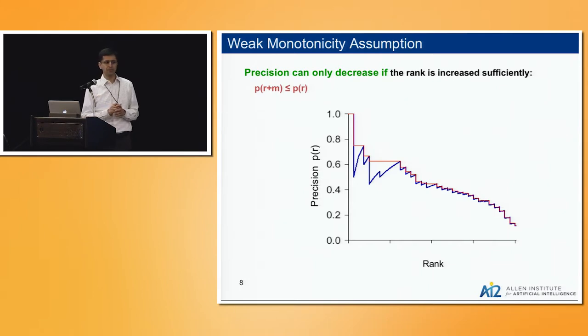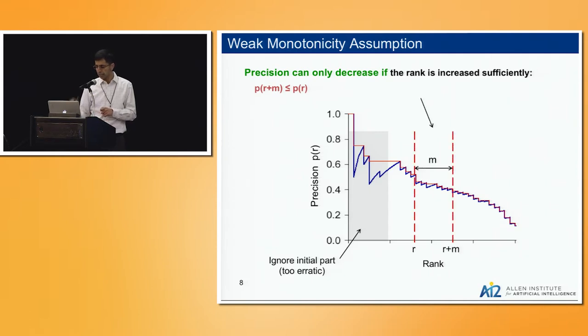Let's get to that assumption I mentioned earlier, weak monotonicity. What this says is that if you plot this precision function, precision as a function of rank R, in the beginning we can't do much. These functions tend to be very erratic just because they are averages of a few numbers of zeros and ones. But once you get far enough, these averages stabilize and you start to see some trend.